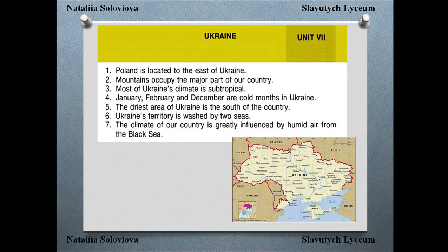Now the task: decide if the sentences are true or false. Let's look at the map and try to answer — you may use the text to check. So: 'Poland is located to the east of Ukraine.' East is here, west is here — Poland is not to the east, it is to the west of Ukraine. So the first sentence is false.